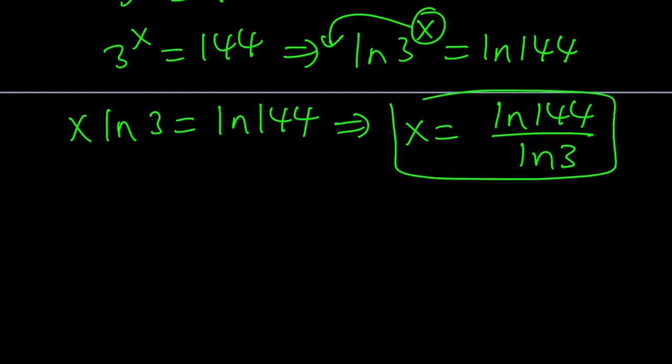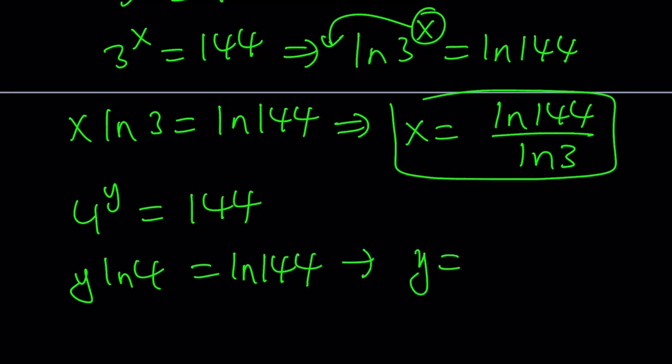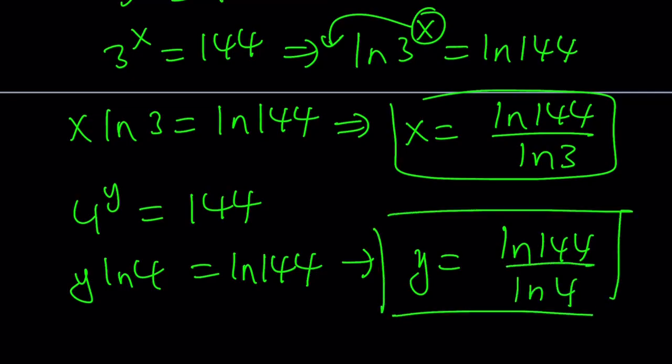So that's the value of x and we can do the same thing for y. To keep a long story short, we can ln both sides. We're going to get y ln 4 equals, don't ask why, ln 144. From here y is going to become ln 144 divided by ln 4. So we got two fractions that have the same numerator, not the same denominator. But don't worry, we're going to flip them and add them, which is good because then we're going to have a common denominator.